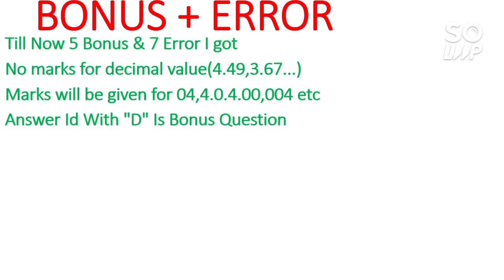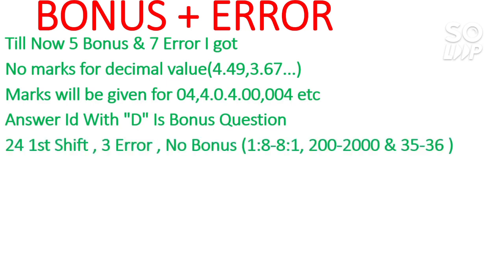Similarly for 3 to 5 as well — if you write in that manner you will get marks. Next, if an answer ID has option D in the final answer key, that means the question is a bonus and will not be considered for evaluation — no positive, no negative marks for that question. Now I will consider the shift-wise error and bonus. For the 24th first shift, there are 3 errors and no bonus.